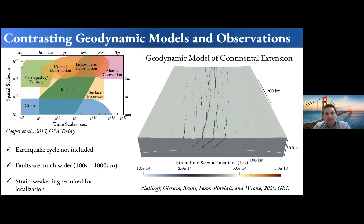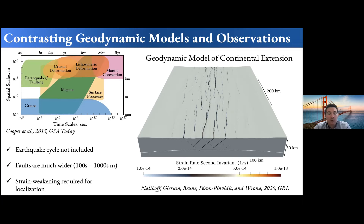Contrasting to geodynamic models of fault evolution: this image is showing the active strain rate in a 3D thermomechanical model of continental extension after 10 million years of rifting at five millimeters per year. The coloring shows areas of highest strain rates — basically the locations of faults. A key difference from nature is that the earthquake cycle is not included; our time steps are on the order of hundreds to thousands of years, so we skip over the earthquake cycle. The faults are also typically much wider — shear zones may be on the order of hundreds to thousands of meters.